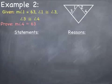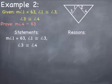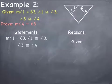Example 2 says the measure of angle 1 equals 63 degrees, angle 1 is congruent to angle 3, and angle 3 is congruent to angle 4. They are asking us to prove that the measure of angle 4 equals 63 degrees. Again, when writing a proof, start with what you were given — I am going to rewrite what is highlighted for my first statement, and the reason is that it was given to me in the problem.